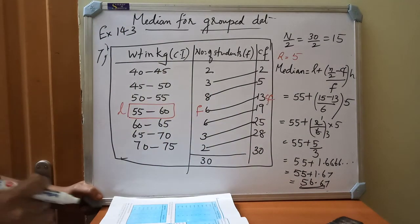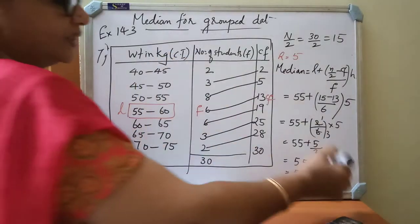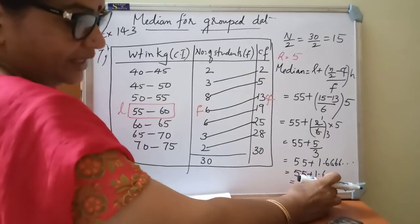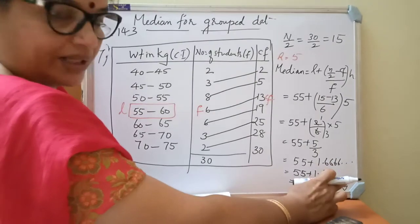That is 56.67. This will be what? This will be kilogram. Because they are waiting kilogram only there. So the unit you must write is kilogram. Don't write only the data, only the number. And the unit also you must write. Then only you will get full marks.